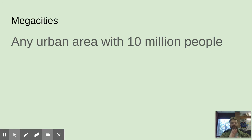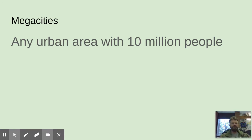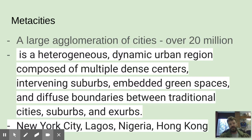A megacity is an urban area with 10 million people — it's one place, like New York City, whose metropolitan area is about 18 million. Other examples include Shanghai, China and Rio de Janeiro, Brazil. Then there's a metacity, which is a large agglomeration of cities all together in the same place.